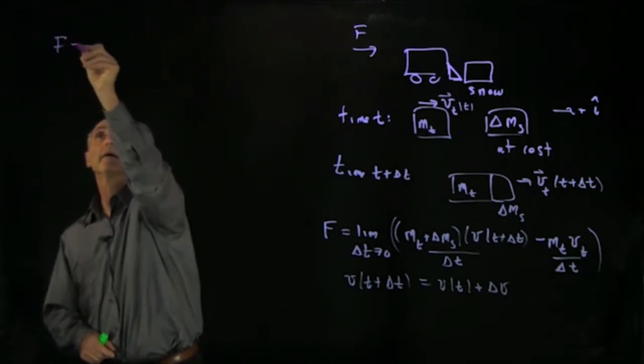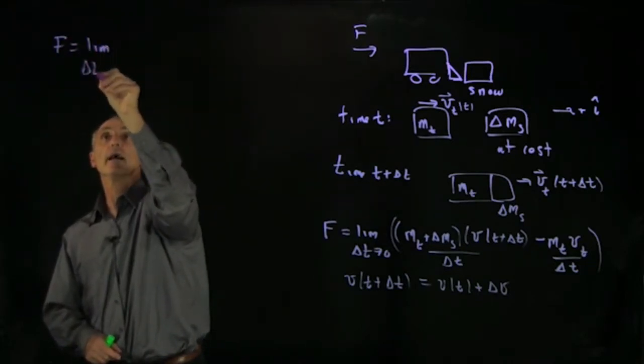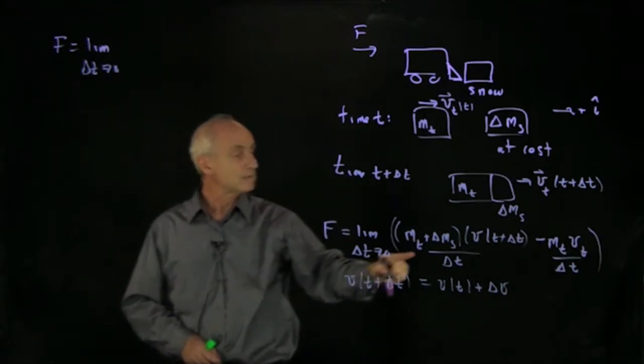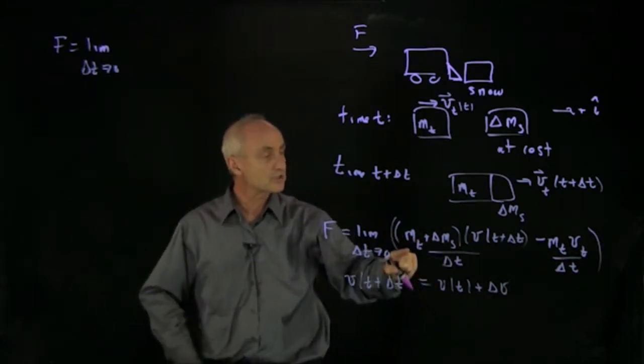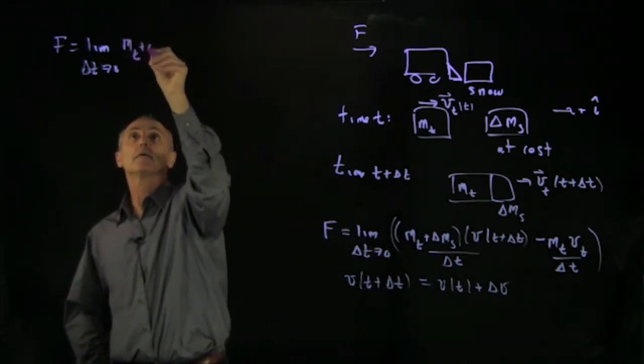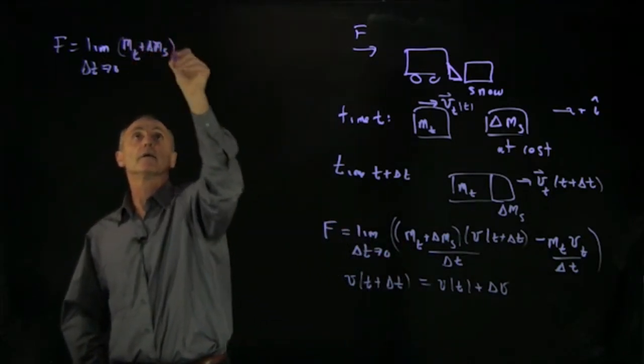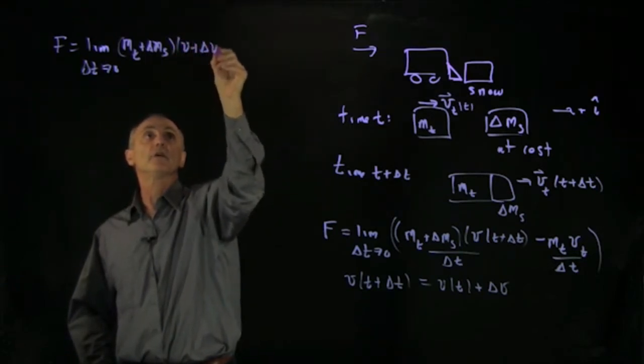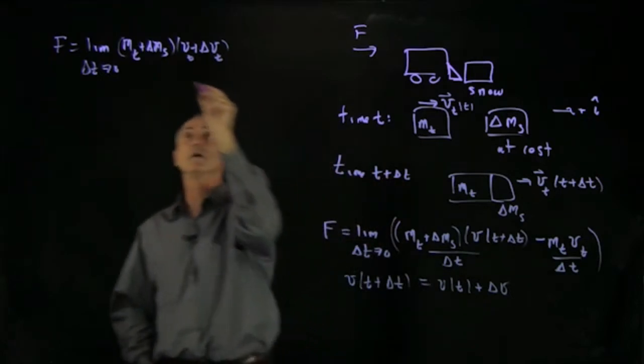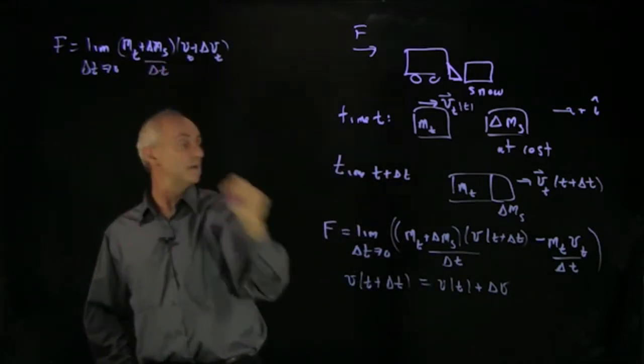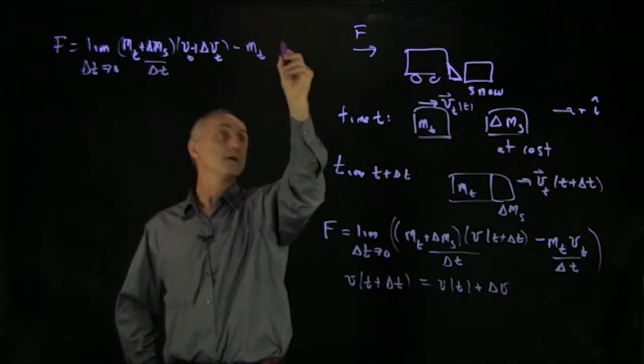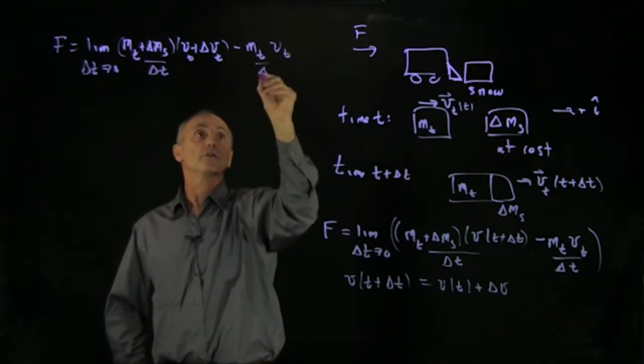And what we want to do now is write out our equation. We have F equals the limit as delta t goes to 0. When we write this out, notice that we're going to have a number of terms here. We have mt plus delta ms times v plus delta v of the truck. That's the first term divided by delta t. And the second term is just minus mass of the truck v of t over delta t.